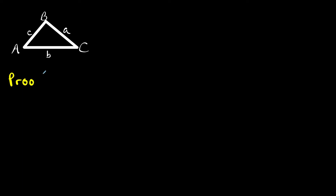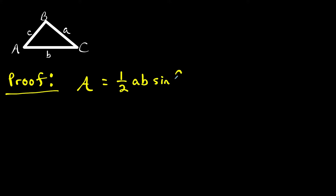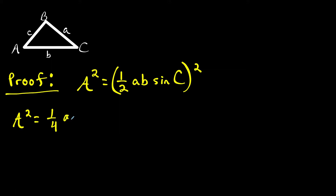For this proof, what we're going to do is start off with the trig formula for the area of a triangle. The trig formula for the area of a triangle is one half times side A times side B times sine of angle C. I'll make this A a little scriptish to differentiate it, because this is going to represent area. And what I'm going to do is square both sides — so we have area squared equals one fourth times A squared times B squared times sine squared C.